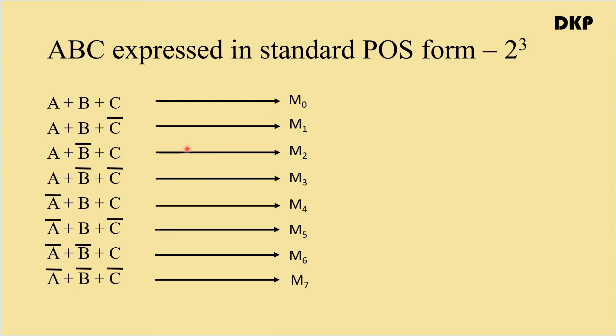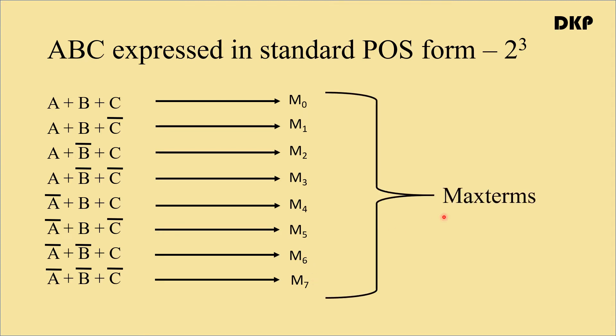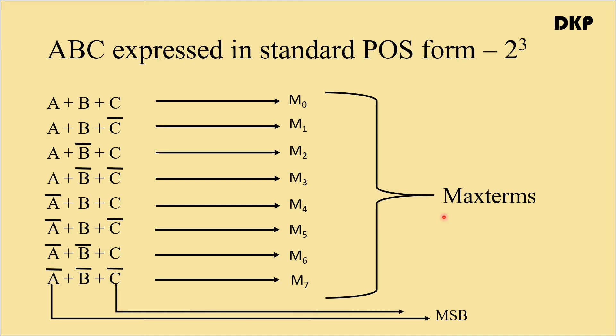Continuing the POS designations: A bar plus B bar plus C is designated as M6, and A bar plus B bar plus C bar is designated as M7. These designated terms M0, M1, M2 and so on up to M7 are called max terms. A is the MSB — most significant bit — of the max term designator, and C is the LSB — least significant bit — of the max term designator.